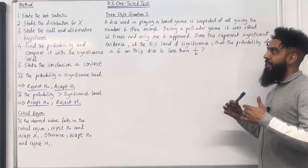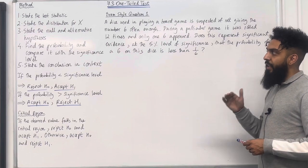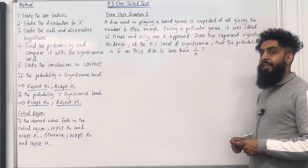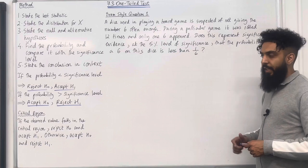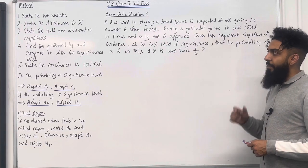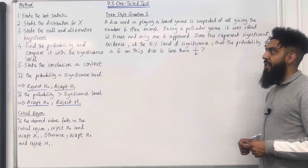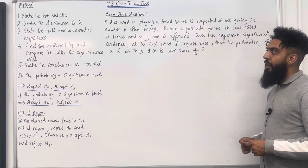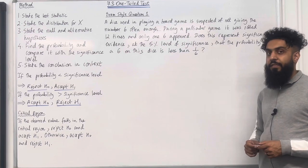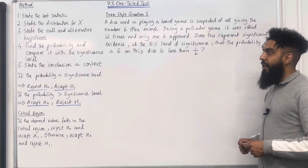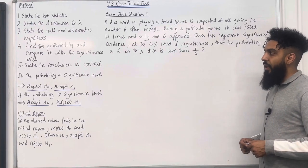I'm going to start by explaining the step-by-step method of hypothesis testing. Step 1: state the test statistic. Step 2: state the distribution for X. Step 3: state the null and alternative hypothesis. Step 4: find the probability and compare it with the significance level. And finally, step 5: state the conclusion in context.